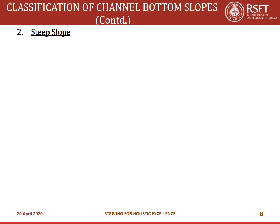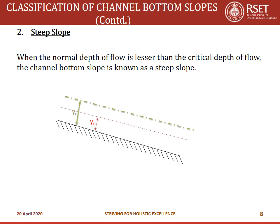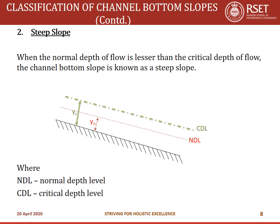The next classification is steep slope. When the normal depth of flow is lesser than the critical depth of flow, the channel bottom slope is known as steep slope. When the flow occurs as uniform flow the depth is yn, and when as critical flow the depth is yc. In a steep sloped channel, critical depth yc is greater than normal depth yn, so CDL is above NDL.